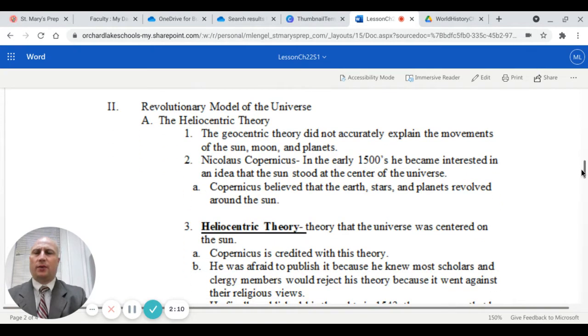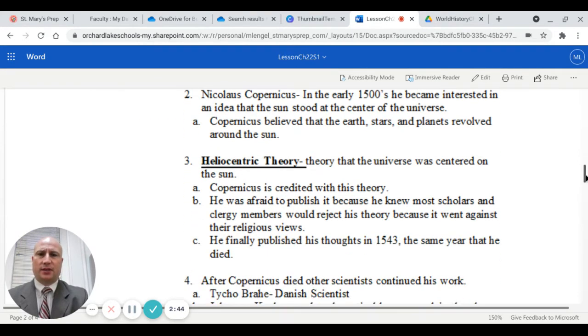We're going to take a look at a revolutionary model of the universe called the heliocentric theory. The geocentric theory does not accurately explain the movements of the sun, the moon, the planets. Nicolai Copernicus in the early 1500s became interested in an idea that the sun may be at the center of the universe, or solar system. Copernicus believed that the earth, the stars, and planets revolved around the sun. This is called the heliocentric theory. The idea that the universe is centered on the sun. Copernicus is generally credited with this theory.